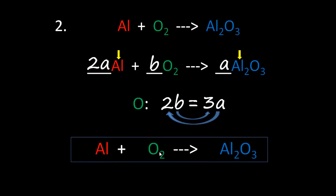In step four, we substitute the values. Since a equals 2: two times two equals four. Then b is 3 and a is 2, and the equation is balanced.